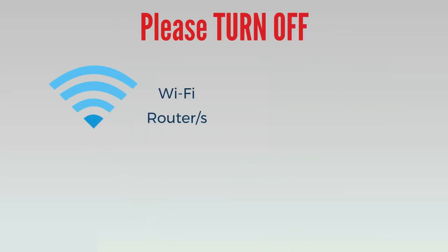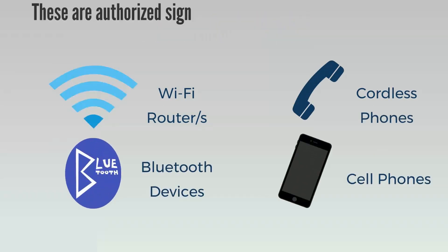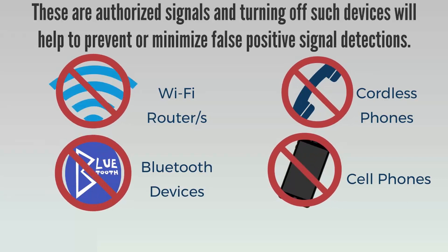Wi-Fi router or routers, cordless phones, cell phones, Bluetooth devices. We call these authorized signals and turning off such devices will help to prevent or minimize false positive signal detections.